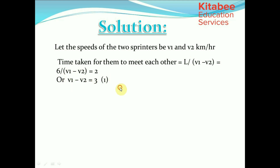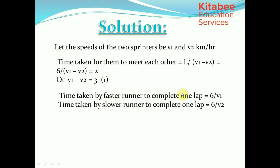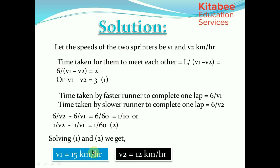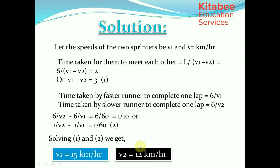Time for faster runner to complete one lap is 6/v1 and for slower runner is 6/v2. The difference is 6 minutes, so 6/v2 − 6/v1 = 1/10, which gives 1/v2 − 1/v1 = 1/60. This is equation 2. Solving equations 1 and 2, we get v1 = 15 km/h and the speed of the slower runner is 12 km/h.